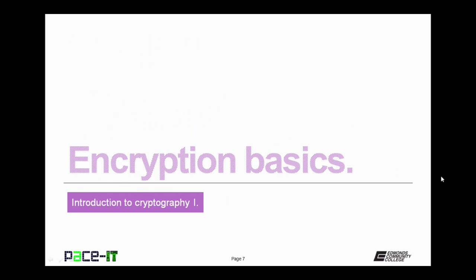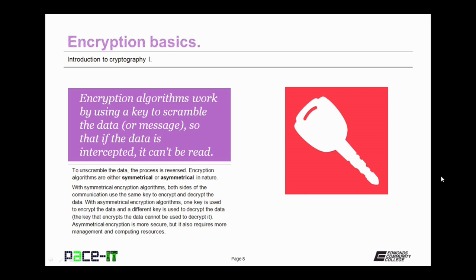It's time to discuss encryption basics. Encryption algorithms work by using a key to scramble the data or message so that if the data is intercepted, it can't be easily read. To unscramble the data, the process is reversed.